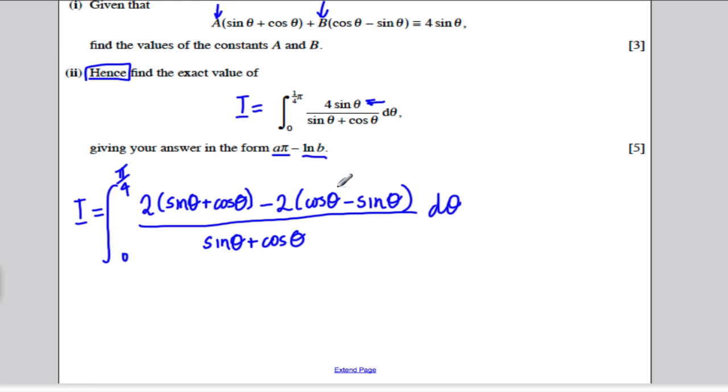How does that help us? Well, I've got two terms subtracting each other on the numerator. I can divide them both by the denominator. I would therefore be the integral between 0 and pi by 4. Well, 2 sine theta plus cos theta divided by sine theta plus cos theta is simply 2. You can think of it as sine theta sort of cancel in that way.